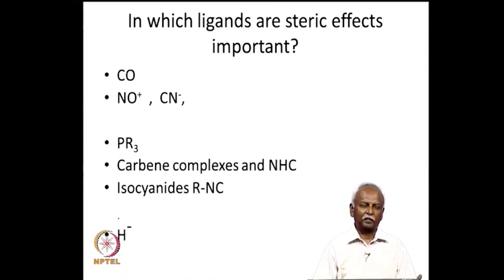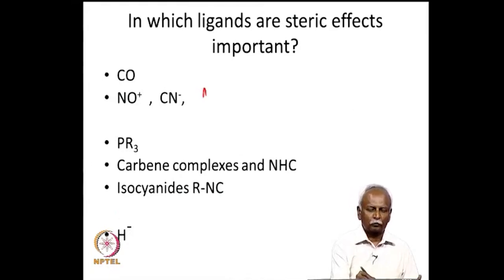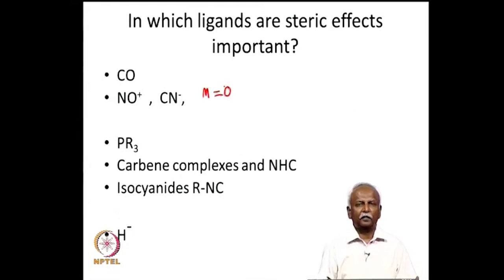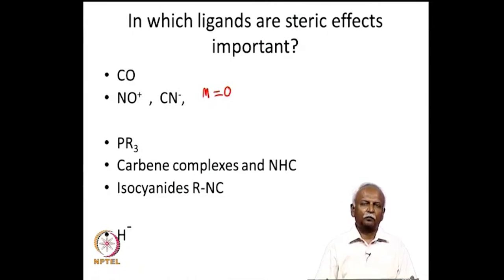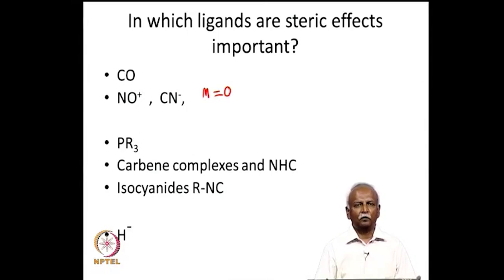I would group ligands into three major categories. The first is a group with a single atom like an oxo group (M=O), nitrosyls, cyanides, and carbon monoxide. The second group includes phosphines, carbenes, and N-heterocyclic carbenes, which can exert significant steric influence through bulky R groups located either on the phosphorus (in phosphines) or on the nitrogen (in NHCs).